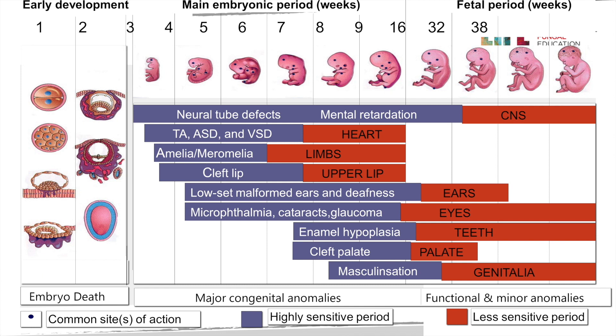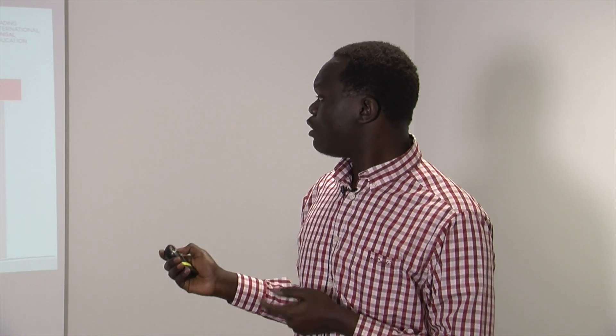Looking at this graph, most lethal abnormalities like congenital diseases, neural tube defects, and major organ damage occur within the first eight weeks of gestation. In the later period of pregnancy, mainly minor anatomical malformations and functional abnormalities occur. For a clinician prescribing antifungal agents to pregnant mothers, you should always weigh the risk versus benefit — the benefit being to cure or prevent fungal disease, while the risks include fetal loss, spontaneous abortion, congenital malformations, toxicities of major organs, prematurity, and learning or behavioral abnormalities.